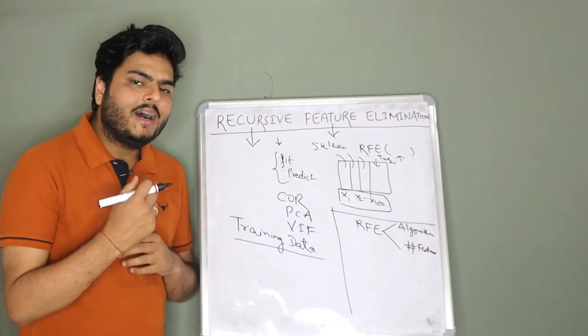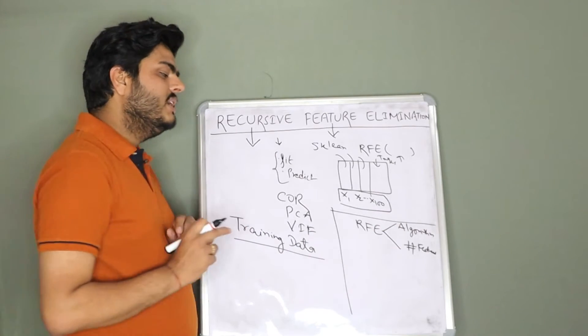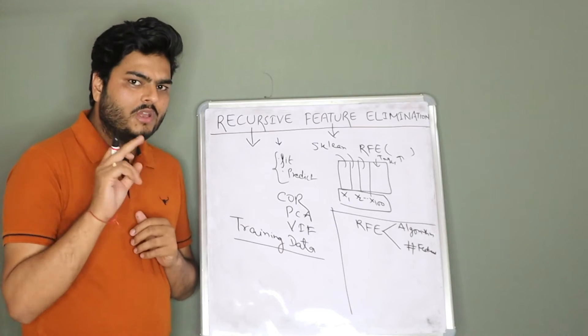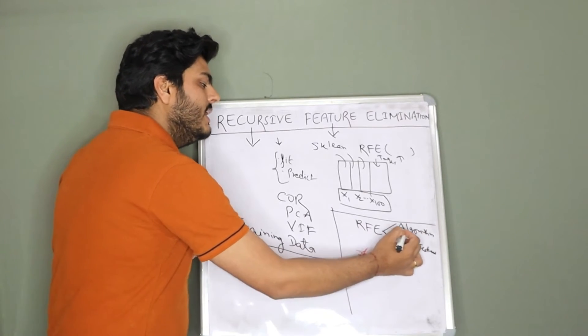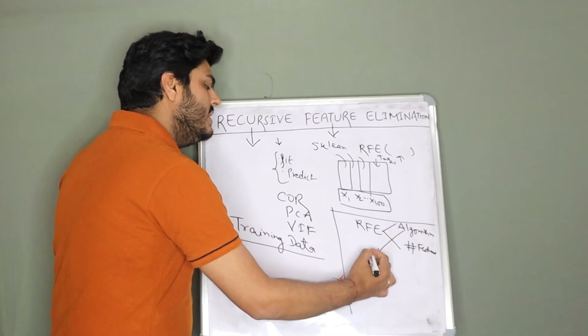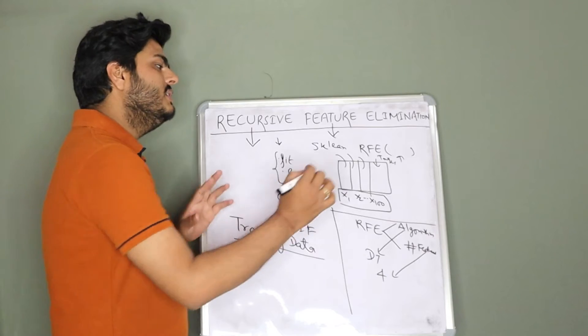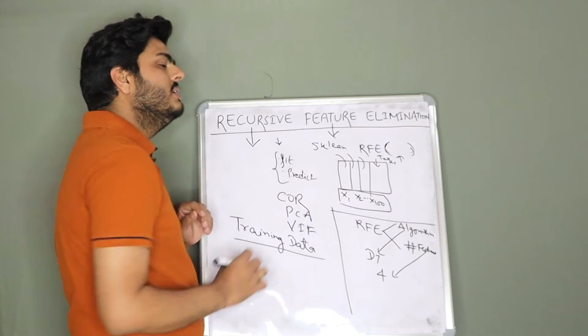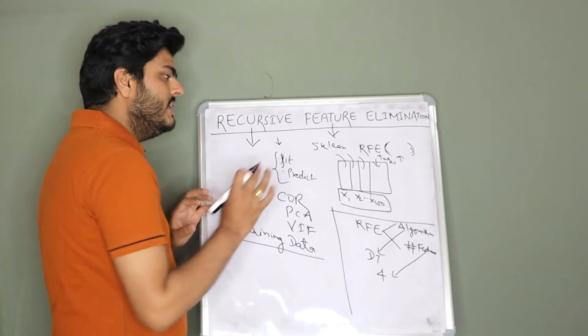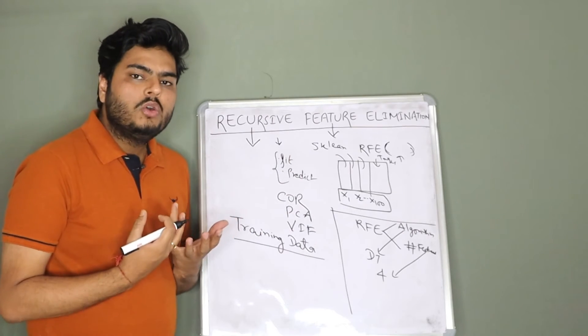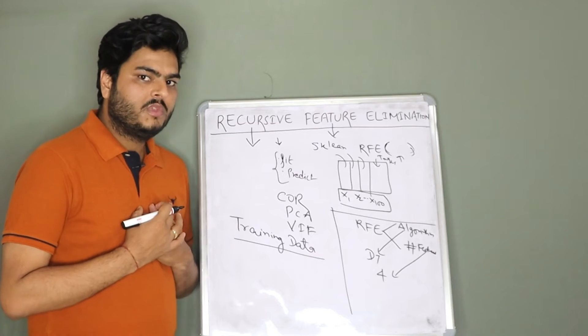Let us say you call RFE method on your training data and in this algorithm you say decision tree, and in this feature you say four. I am just taking two arguments. Algorithm what you are saying? You are saying decision tree and features what you are saying four and you are calling the RFE method of sklearn.